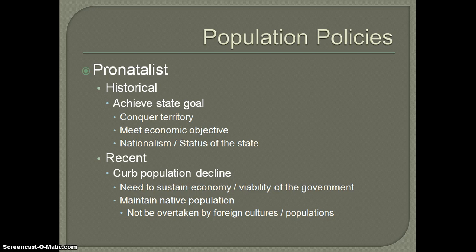That's really a lot of what we've seen historically with pronatalist policies. If we look at it more recently, we've seen efforts by countries to try and curb population decline. You see this a lot in parts of Western Europe, in Russia, and currently in Japan, where the native population is in a little bit of decline. We talked about that in the demographic transition model, so I won't go back to that.